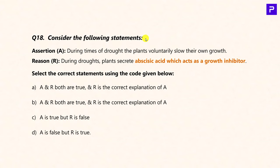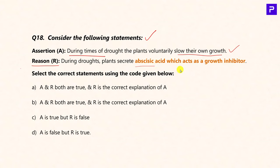Question 15: Consider statements about drought response in plants. Statement A: During times of drought, plants voluntarily slow down their own growth — an adaptive mechanism to survive in arid climates — True. Reasoning R: During droughts, plants secrete abscisic acid which acts as a growth inhibitor — True. Both A and R are true and R is the correct explanation of A.